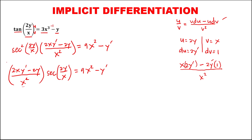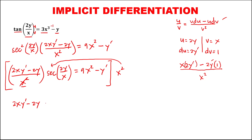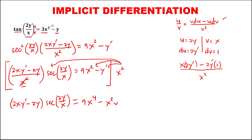To omit this denominator, multiply this whole equation by this denominator, that's x squared. Distribute so we can cancel now this x squared. So we have now 2xy prime minus 2y, then times secant squared of 2y over x, equals 9x to the power 4, minus x squared y prime.